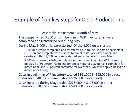We'll use the information presented in this slide for the example that we will work through in the following slides. We're going to look at the assembly department within our company for one month — in this example, it's the month of May — and we are assembling identical desks. We mass produce these desks and we have two different departments: an assembly department and a finishing department. We're focusing on the assembly department in this example.